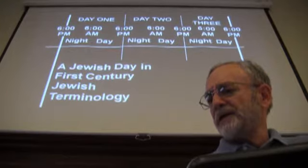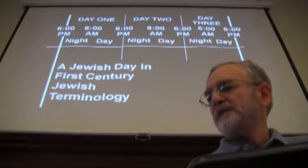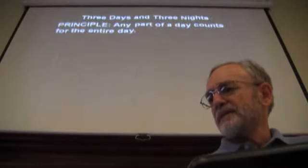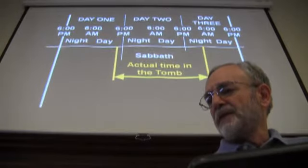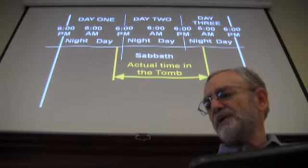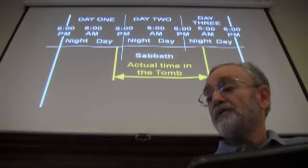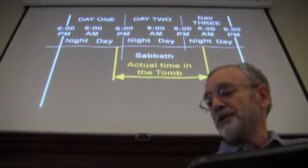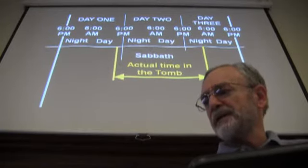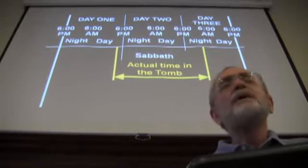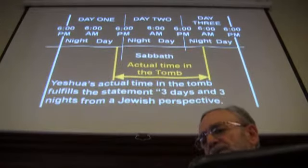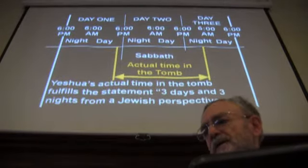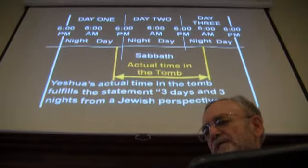We looked at a Jewish day in first century terminology, beginning from evening to evening, a night and a day equaling one day. We examined the rabbinic principle that any part of a day counts for the entire day. The actual time in the tomb was maybe an hour before the Sabbath, 24 hours of the Sabbath, and 10-12 hours into the third day. The actual time was probably 30-35 hours, but fulfills the statement three days and three nights from a Jewish perspective.